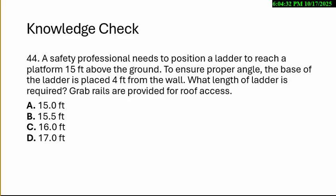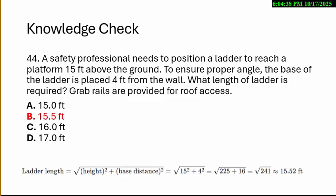This is what they call Pythagorean Theorem. We're going to have the ladder at the proper angle. The diagonal is going to be at 15 feet. The 4 feet from the wall, so we have 15 feet for the vertical, 4 feet for the horizontal. The diagonal is A squared plus B squared equals C squared.